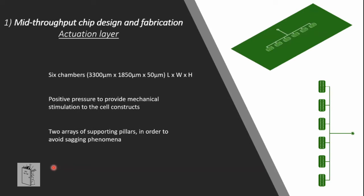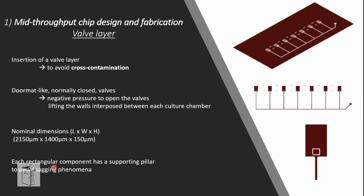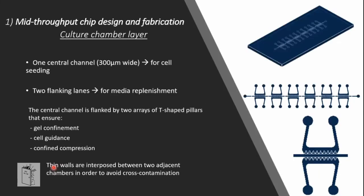Describing each layer in more detail: the actuation layer consists of six different chambers where positive pressure is applied to exert mechanical stimulation on the cell construct. The valve layer avoids cross-contamination by exploiting a system of tourniquet-like closed valves — applying negative pressure lifts the walls interposed between each culture chamber. The chamber layer also consists of six chambers.